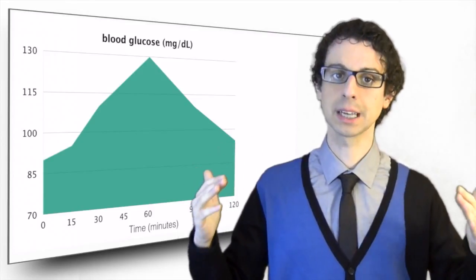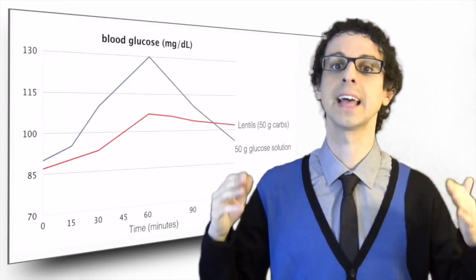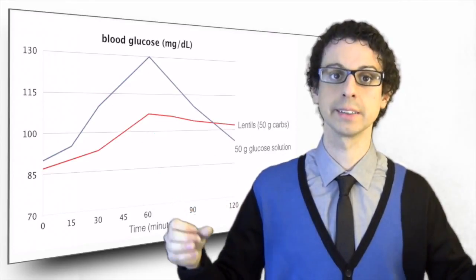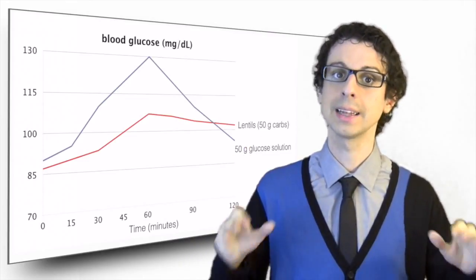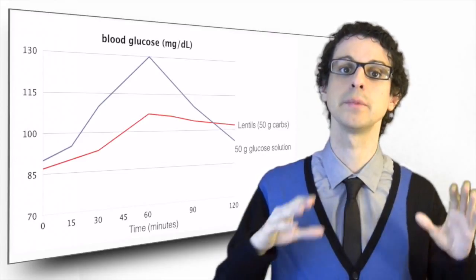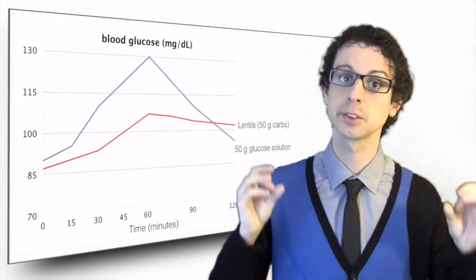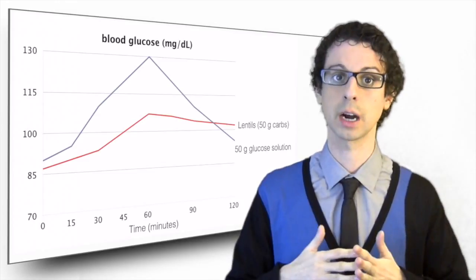Then you take the same subjects and you have them eat a test food, say a bowl of lentils, in such an amount that the quantity of carbs they contain is still 50 grams. Let me stress this again, you're not giving them 50 grams of lentils, but a serving of lentils that provides 50 grams of carbs.